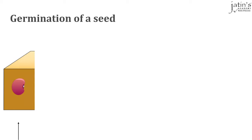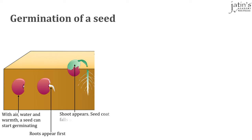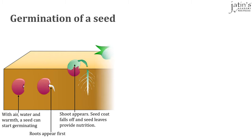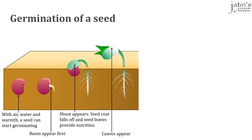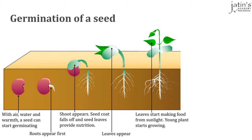Let's see how a seed germinates. First, under the right conditions with the presence of air, water and warmth, a seed starts germinating. First the roots appear, then the shoot appears. The seed coat falls off and the seed leaves provide nutrition for the young plant to grow. As the first leaves appear, the seed leaves have dried up and they will fall off. The new leaves start making food with the help of sunlight through the process called photosynthesis, and the young plant starts to grow.